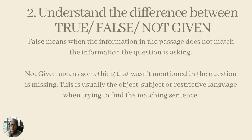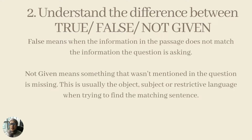The second IELTS reading strategy is that you need to understand the difference between true, false, and not given. This is a particular question type you may see in the IELTS reading, and a lot of students have a difficult time identifying the difference between false versus not given. False means when the information in the passage does not match what the question is asking. Not given means something that wasn't mentioned in the passage and is missing — usually related to an object, subject, or some sort of restrictive language when trying to find a matching sentence.